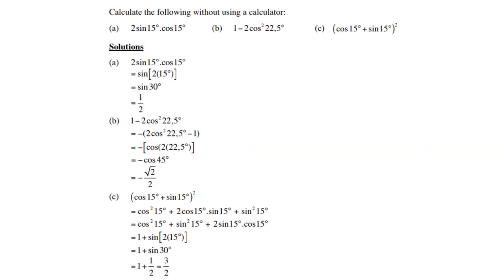Let's calculate the following without using a calculator. First, 2 sin 15° cos 15° is therefore sine of twice 15°, which is sine of 30°, which equals one half. Second, 1 minus 2 cos² 22.5°: taking out the negative and switching, 2 cos²(22.5°) minus 1 is the cosine double angle of 2 × 22.5°, which is cos 45°, so the answer is minus the square root of 2 over 2.